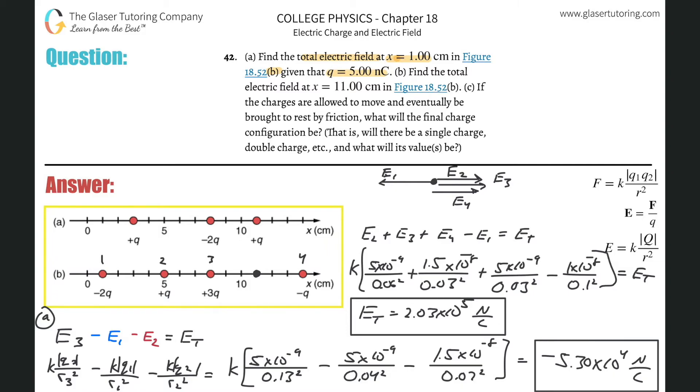And then C: If the charges are allowed to move and eventually be brought to rest by friction, what will the final charge configuration be? What? Okay. How do we—all right. I don't know, I'm not really sure. So whenever you're not sure, just start with something, start with something simple. So I guess we're trying to figure out if these are all left to their own devices, how will they organize? Will they all organize into one point or will they distribute? So I guess I'm going to start with the biggest charge.